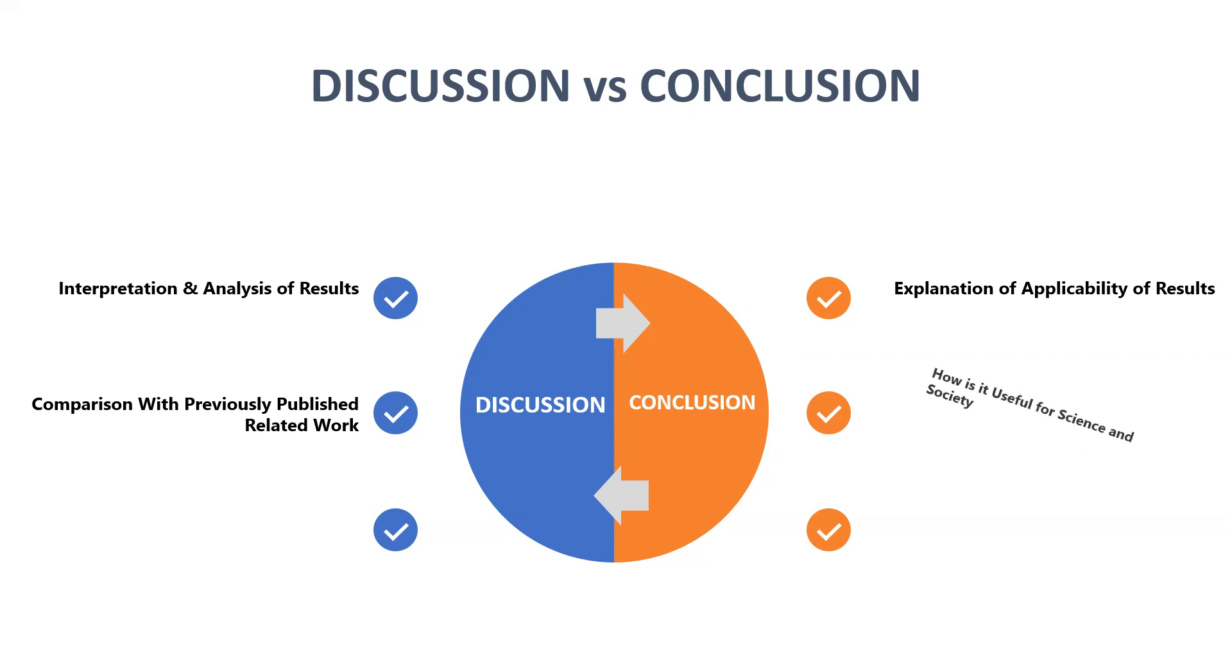Coming to the second point in conclusion, we verify how it is useful for the scientific community and researchers—how the results achieved from the particular experimentation or thesis are useful for the scientific community. Similarly, we look at how it is useful for society on a large scale. We check what the implications are; these results are discussed in the conclusion part of the dissertation or paper.